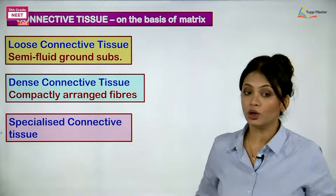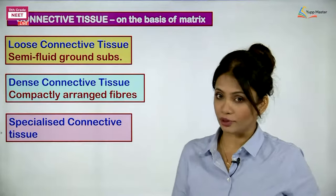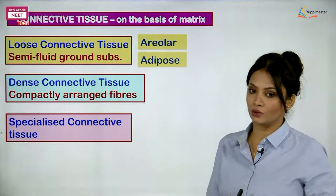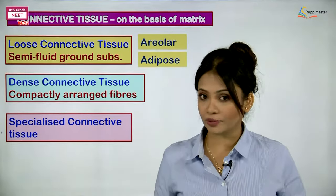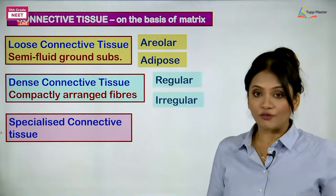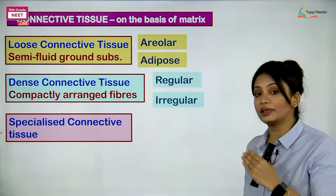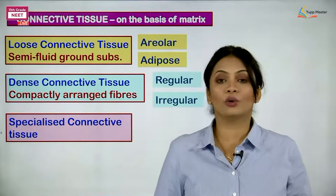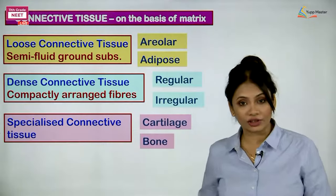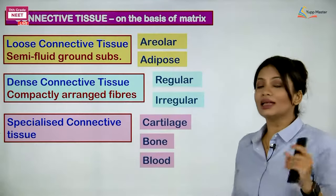In loose connective tissue there were two types: areolar and adipose. In dense connective tissue, depending on fiber arrangement, we had dense regular and dense irregular types. In specialized connective tissue, the matrix could be mineralized — as in cartilage and bones — or fluid, as in blood.